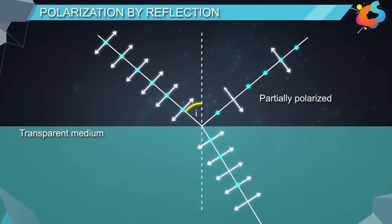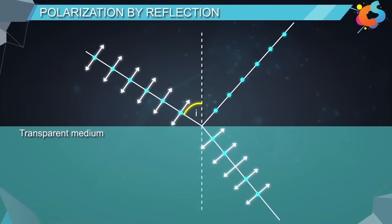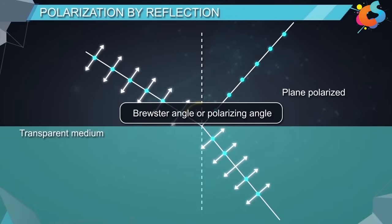If we look at the refracted ray, we can see that it is almost unpolarized. It was found that as the angle of incidence changed, the degree of polarization of the reflected ray also changed. At a particular angle of incidence, the reflected ray is completely plane polarized, and the vibrations are parallel to the surface of water. This particular angle is called Brewster's angle or the polarizing angle.